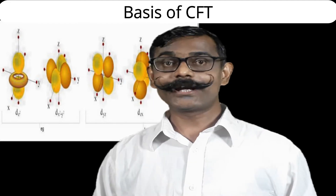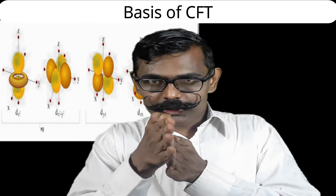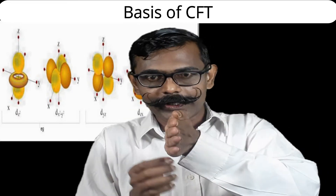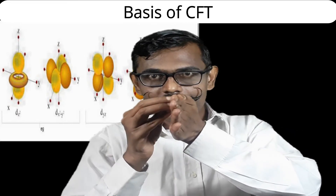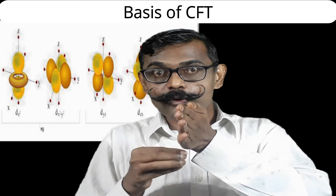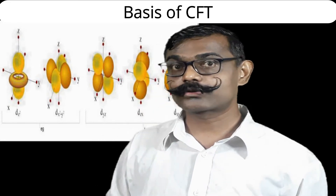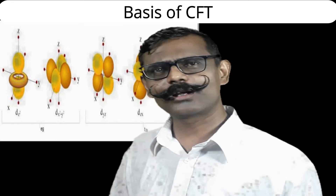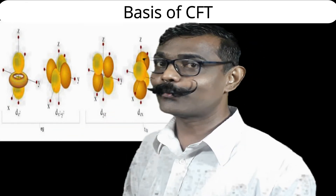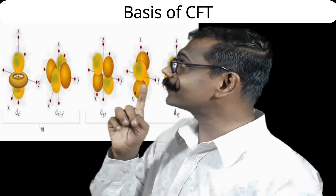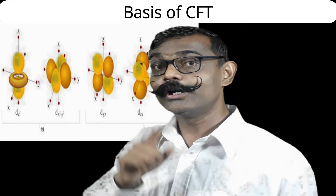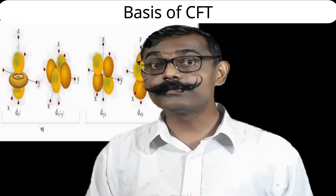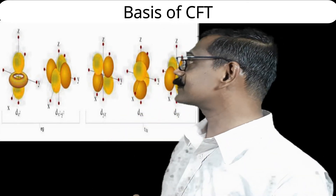The third orbital is the dyz orbital. If we consider the y axis towards you and z axis upward, this is the yz plane. The lobes will be in between the y and z axes — two opposite lobes in yellow and two in brown — making a 45-degree angle to both the y and z axes.